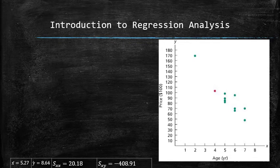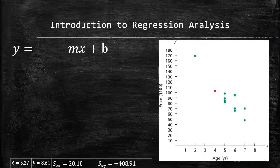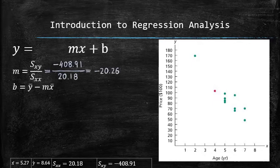To find the equation of the regression line in the form y equals mx plus b, we apply the given formulas for m and b.